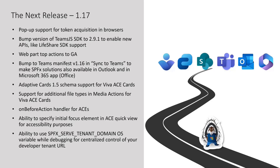We bumped the Adaptive Cards schema version to 1.5, meaning you can now use tables in your Quick Views in ACEs. We now support additional file types in Media Actions for Viva ACEs Cards. We added an On Before Action Handler for ACEs, which I will show during the demo. Next is the ability to specify initial focus elements in ACEs Quick Views for accessibility purposes — you can define what element should be focused first for screen readers. And one more thing especially valuable for developers working on multiple SharePoint solutions: you can now have a per-tenant serve domain OS variable, and when debugging in the serve.json file, a placeholder will be automatically replaced with this OS variable.